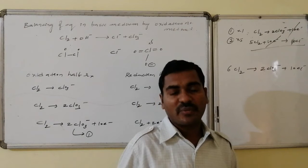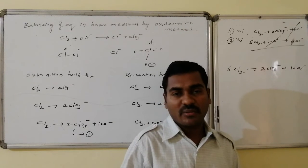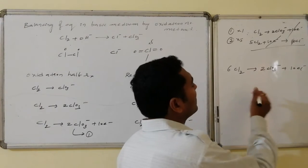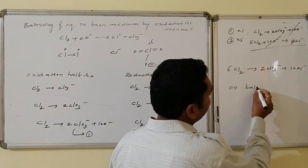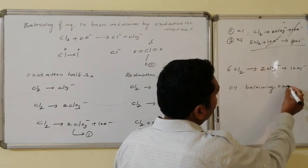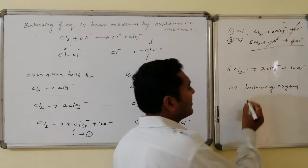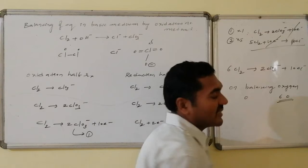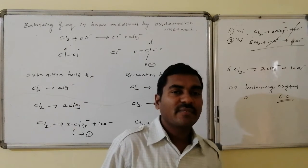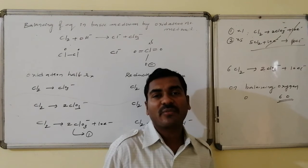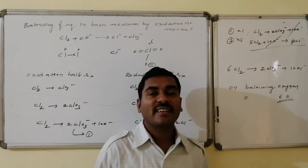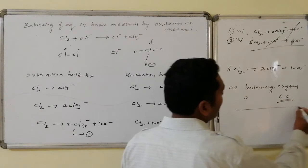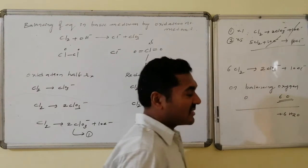We now need to balance the equation in terms of the medium. Balancing oxygen atoms: the reactant side has 0 oxygens, and the product side has 6 oxygens in ClO₃⁻. In basic medium, the rule is: whichever side has the oxygens, add that many water molecules to that side, and add double the number of OH⁻ ions to the opposite side. So we add 6 water molecules to the product side, and 12 OH⁻ ions to the reactant side.